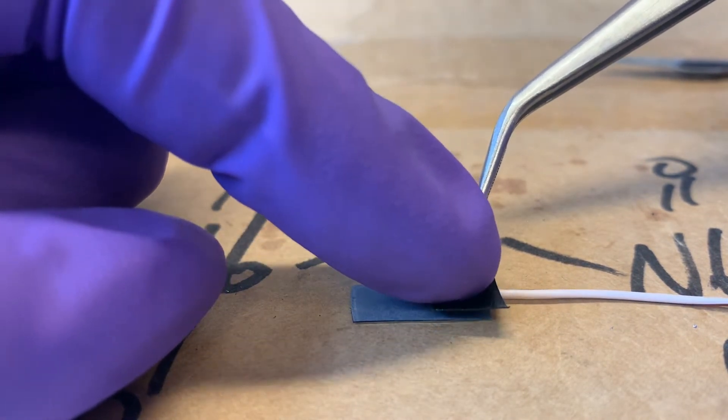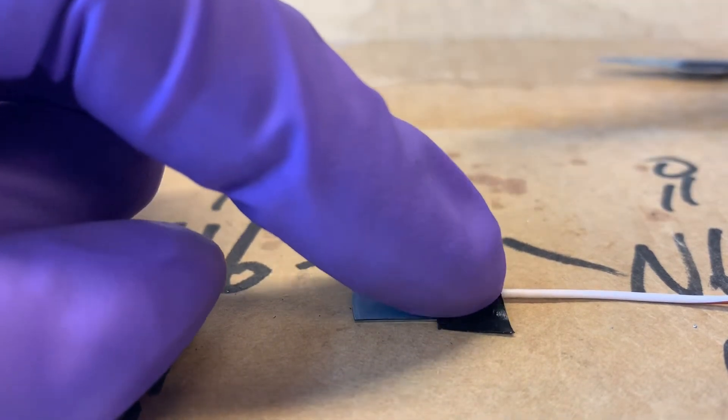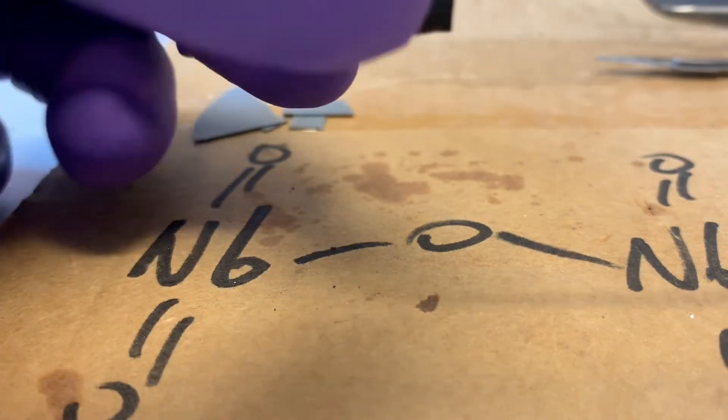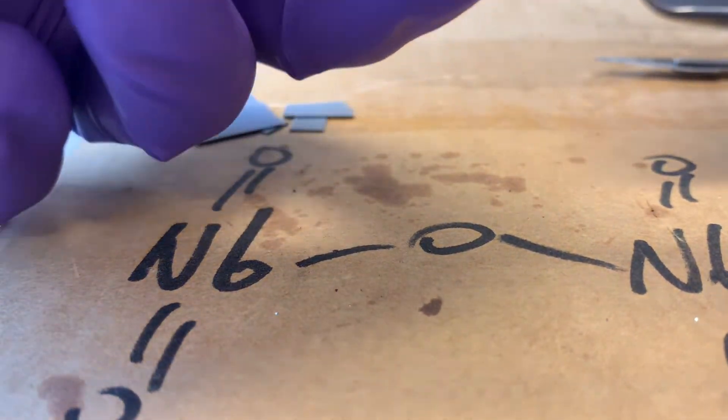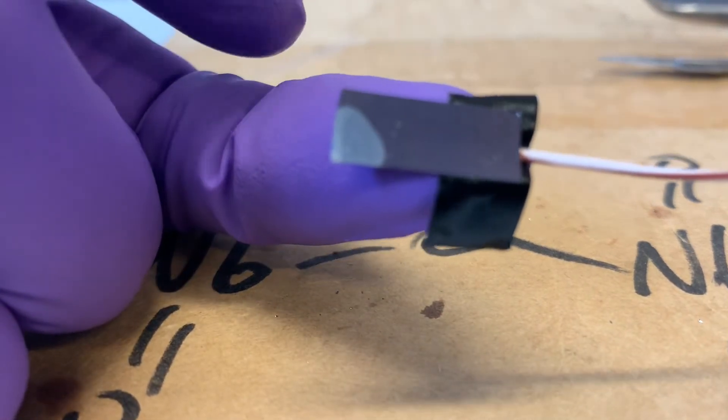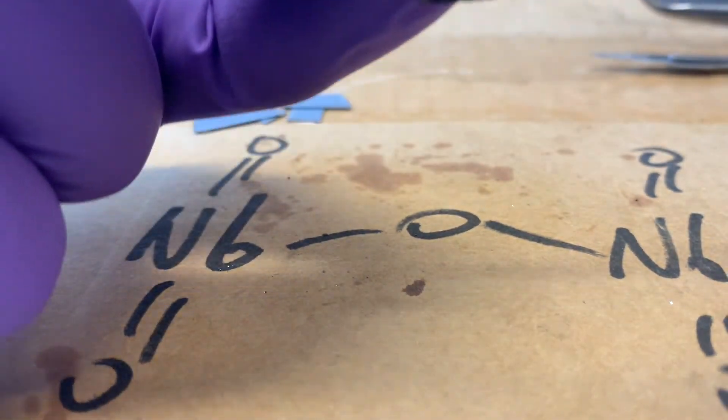So you gently lower it. Steady hands here. Press with one finger. But not too tightly. Then you take it up and you flip it. And you can see that the tape has now fixed the wire onto one edge.